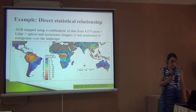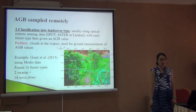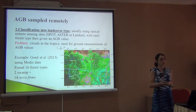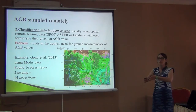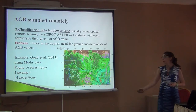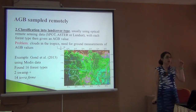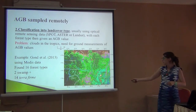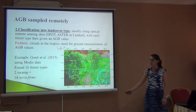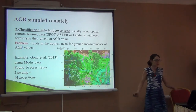Another way to measure biomass and carbon is to classify your area into forest types or vegetation types. Then we know that the swamp forest, for example, has fewer trees and more palms, so we have less above-ground biomass. Other forest types have more deciduous or more evergreen species. Then we can make the calculations.